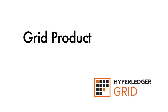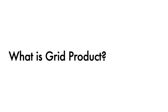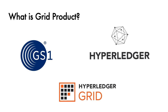Grid Product is a feature within the Hyperledger Grid platform. It provides a way to share standardized product data for items that are transacted, traded, or referenced in a supply chain. Grid Product is grounded in GDSN standards, which are widely adopted open standards developed and maintained by GS1 to represent product data. However, Grid Product features a flexible design that can be extended to other standards as well.